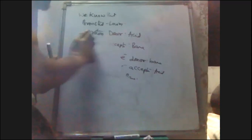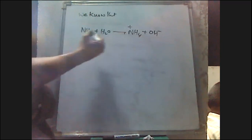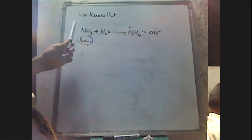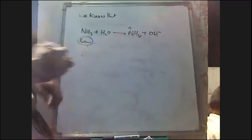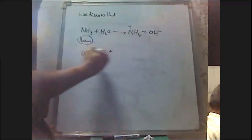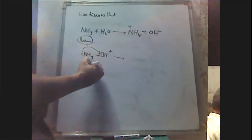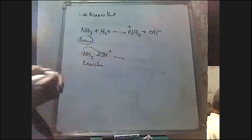When ammonia is interacting with H2O molecules, it is accepting a proton from water and acting as a proton acceptor — so it is acting as a Brønsted-Lowry base. Similarly, as ammonia has a lone pair of electrons, it is able to donate it to electron acceptors, acting as a Lewis base.